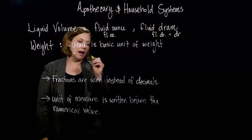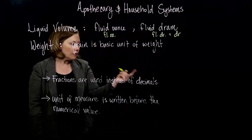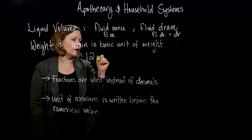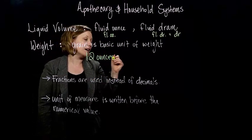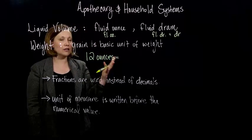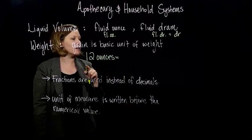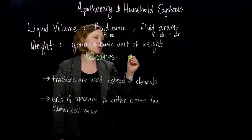The other thing that they do have is ounces and pounds. Except for in the apothecary system, 16 ounces is a pound in the U.S. customary system. But in the apothecary system, it's 12 ounces is one pound.